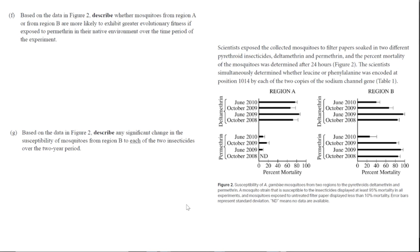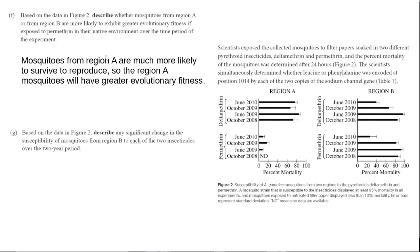For Part F, based on the data in Figure 2, we're going to describe whether mosquitoes from Region A or Region B are more likely to exhibit greater evolutionary fitness if exposed to permethrin in their native environment over the time period of the experiment. Region A had large insecticide use and Region B had none. Looking at permethrin data for Region A compared to Region B, we see lower percent mortality in Region A, meaning those mosquitoes are surviving more. Evolutionary fitness requires surviving to reproduce and pass along genes, so because Region A mosquitoes are surviving more, they're more likely to reproduce — giving Region A mosquitoes greater evolutionary fitness.